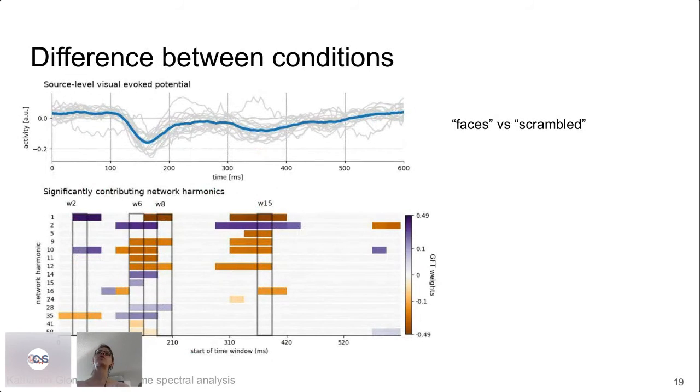But this is just showing people pictures and looking at what happens over time. Can we also look at the difference between conditions, or put in another way, which harmonics are specifically activated related to processing of faces instead of just visual stimuli in general? As I mentioned, people had to decide if they saw a face or a scrambled image of a face. And so far I only looked at the faces. Now I'm looking at the difference between faces versus scrambled. And you see that it looks very different from before. Actually you have this dip around 170 milliseconds, which is a very prominent finding in the literature called the N170. When you look at the network harmonics, you see again that out of the 68 possible network harmonics, only quite few of them are activated.